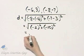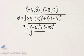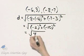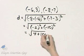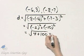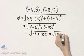And we just continue to simplify. That is the square root of negative 2 times negative 2, or 4, plus negative 10 times negative 10, that is 100. So that is the square root of 104.